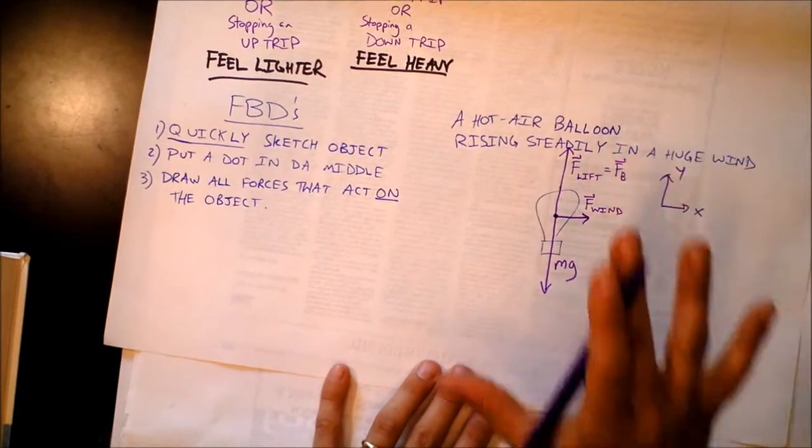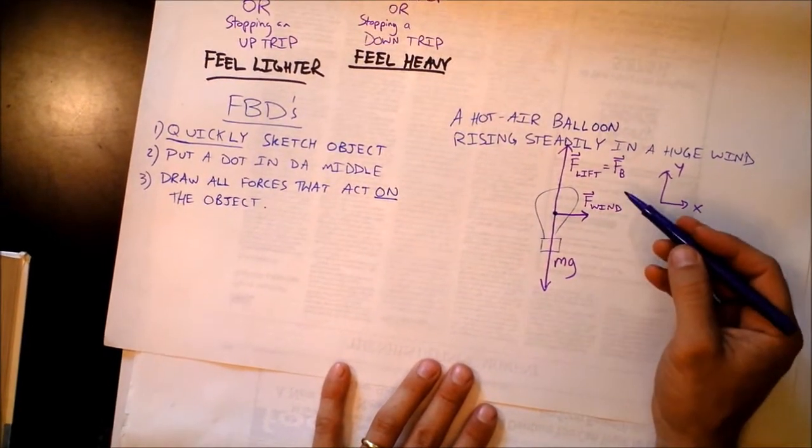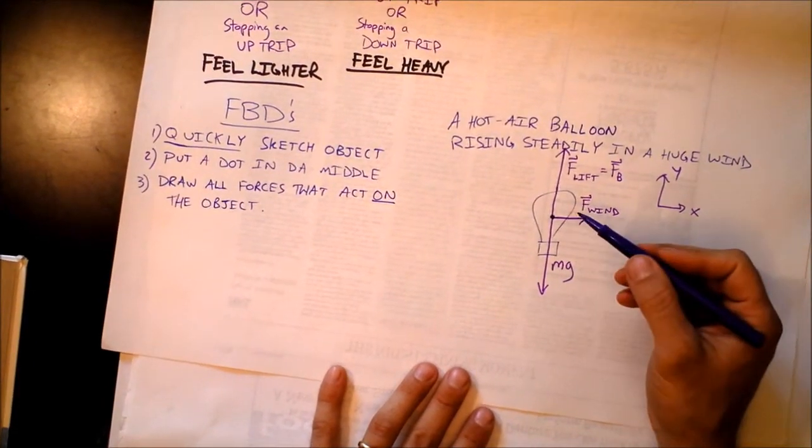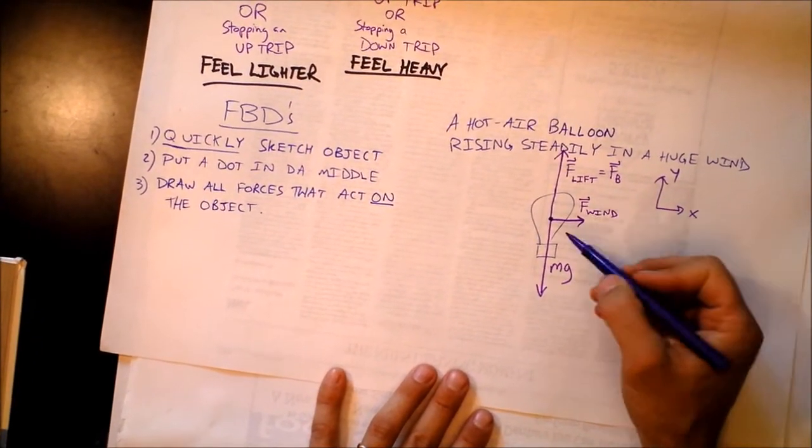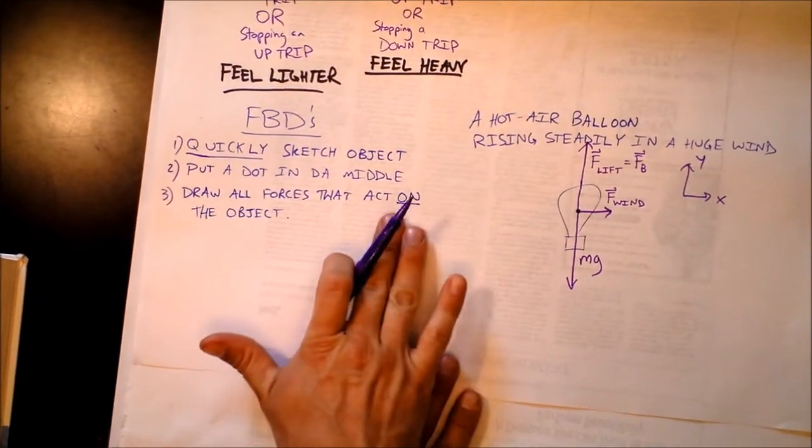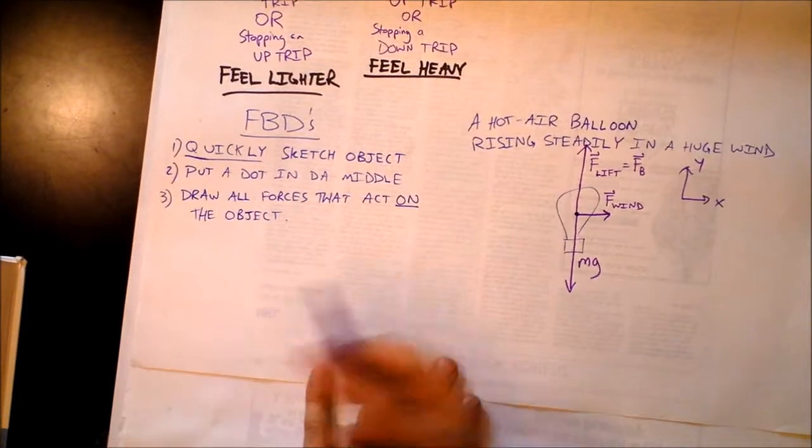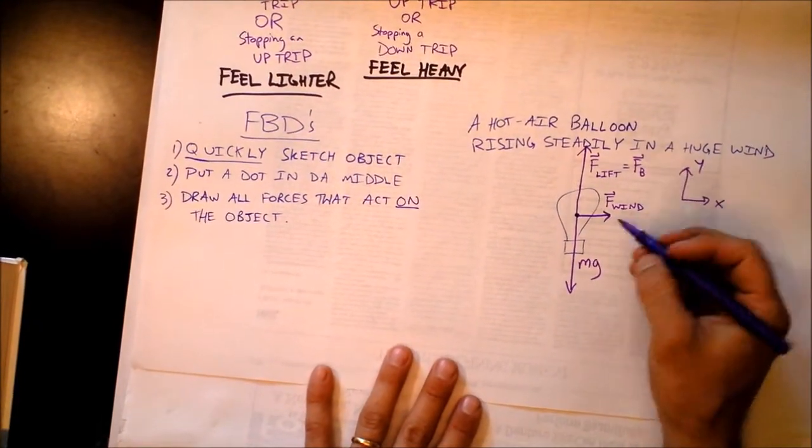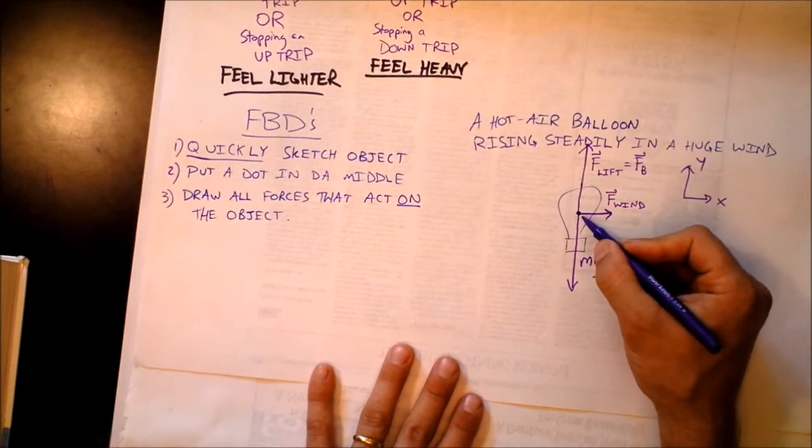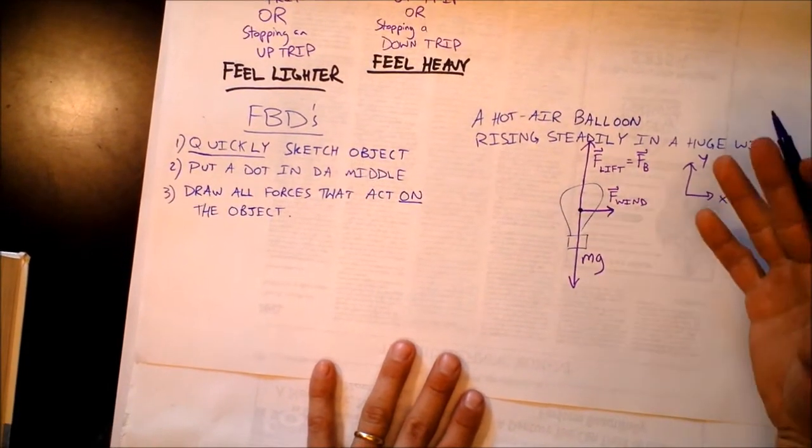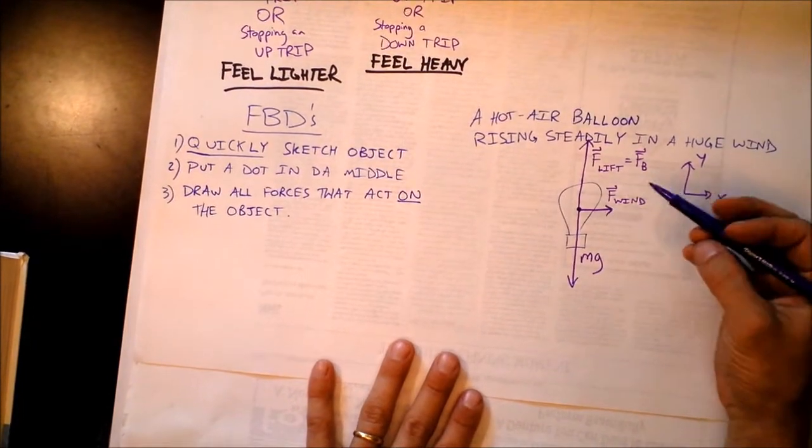Now what we would do after we've got this free body diagram is we'll actually apply Newton's second law in each direction to try to think about what's happening to the hot air balloon. And that brings us back to my previous question. We draw the forces that act on the object because we want to know what's happening to the object. And the only things that can affect the motion of the object are the forces that act on the object. The object moves because of the forces it experiences.